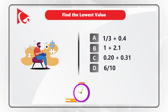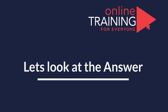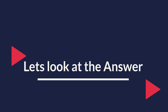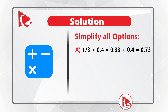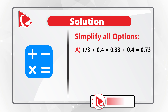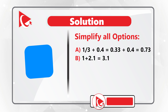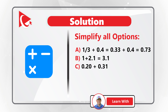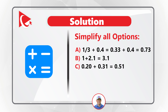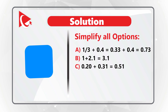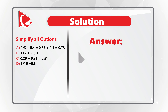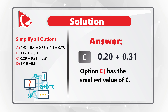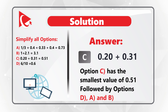The tricky part is that the question is designed to make you do mental math. To get to the final answer, you need to simplify all the options. Option A: one-third + 0.4 = 0.33 + 0.4 = 0.73. Option B: 1 + 2.1 = 3.1. Option C: 0.20 + 0.31 = 0.51. Option D: 6 tenths = 0.6. Option C has the smallest value of 0.51, followed by D, A, and B. Was it challenging for you? Please share your thoughts in comments.